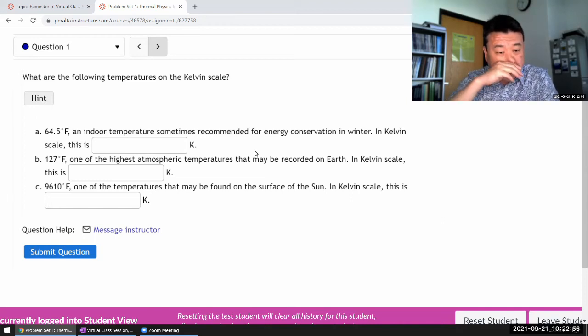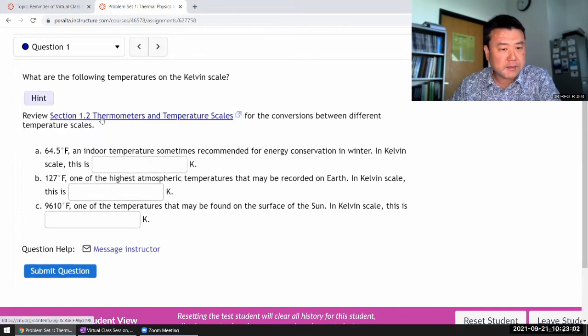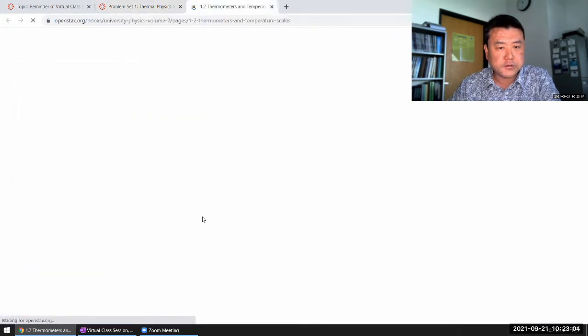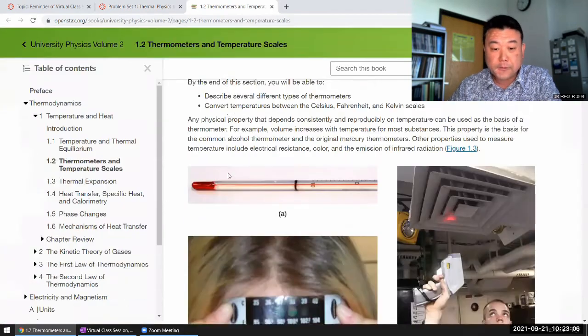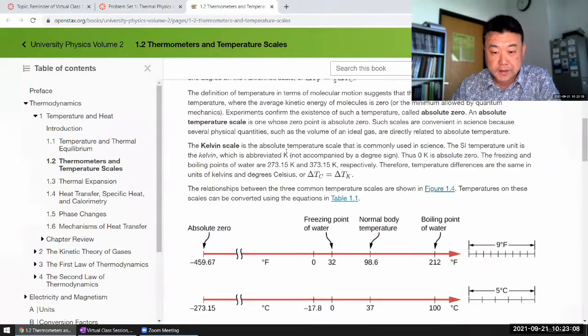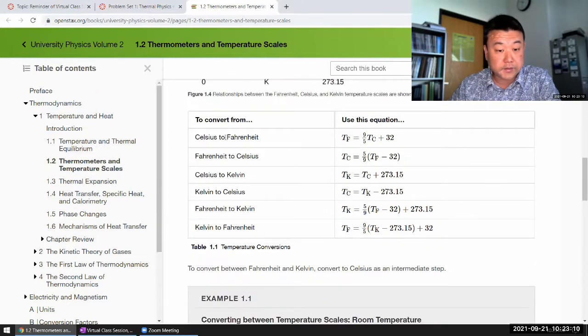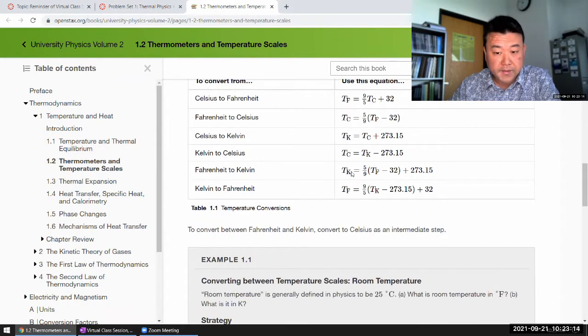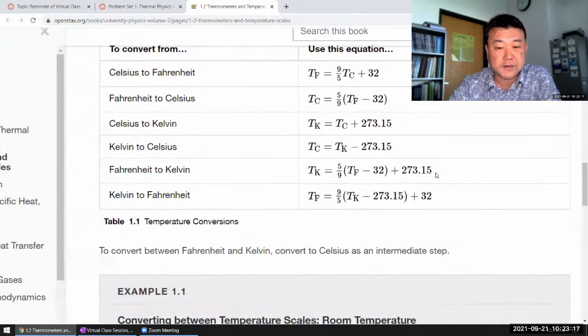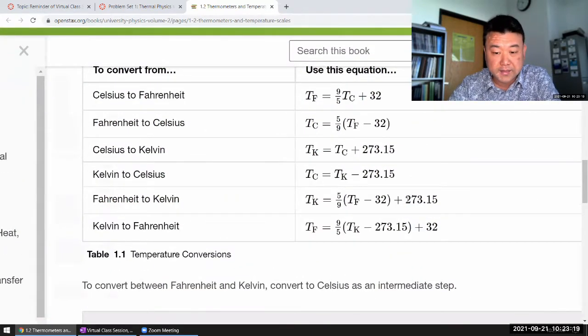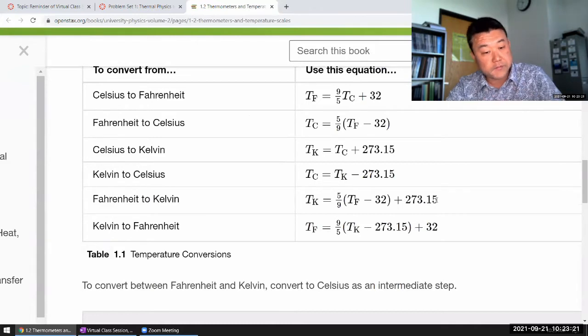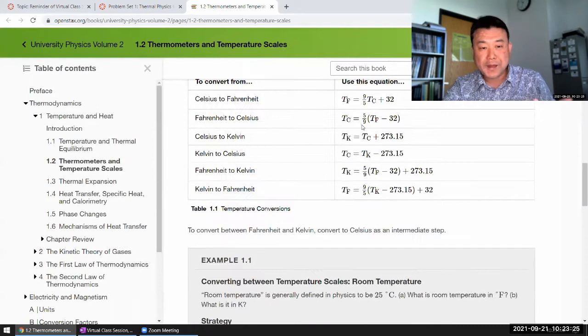So for this question, there is the long proper way to do it, and I certainly do encourage you to be aware of where this formula is. There is a conversion factor from Fahrenheit to Celsius and Fahrenheit to Kelvin. Fahrenheit to Kelvin is basically you convert to Celsius and then add 273.15. Good. You should know how to do it by hand.